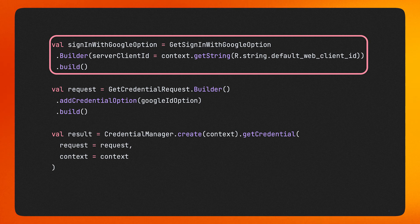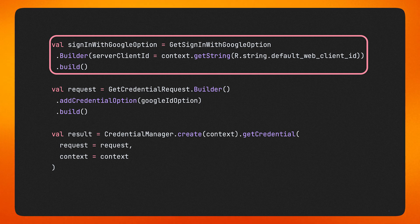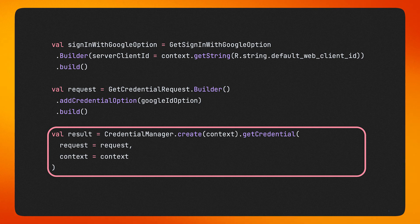To implement the Sign in with Google button, we'll instantiate a Sign in with Google request using Get Sign in with Google option instead of Get Google ID option. And all the rest remains the same. First, instantiate a credential request and add Get Sign in with Google option. Then pass this request to Get Credential to retrieve the user's available credentials.